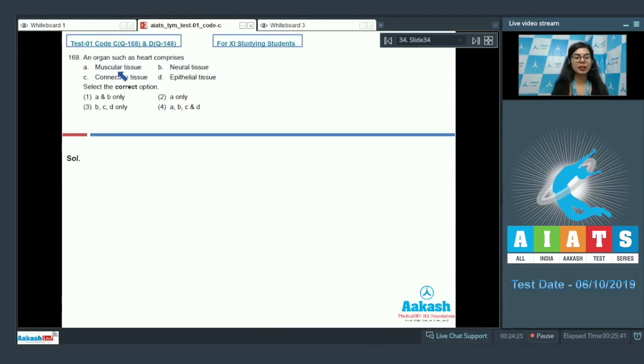Question 168: An organ such as heart comprises muscular tissue, neural tissue, connective tissue, epithelial tissue. Select the correct option: A and B, A B C, D, A B C and D.